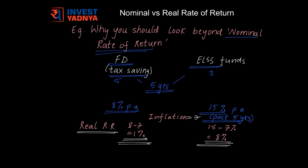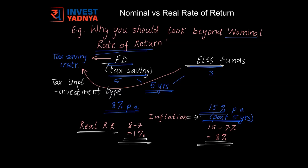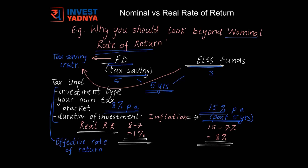When you stay invested in investment-type instruments, the power of compounding does its own magic to create wealth. In the example we just saw, tax saving FDs as well as ELSS funds were tax saving instruments. But when you compare instruments that have some tax implication, do consider the tax implication of the investment type, your own tax bracket, and the duration of investment to arrive at an effective rate of return, which would enable better investment choices.